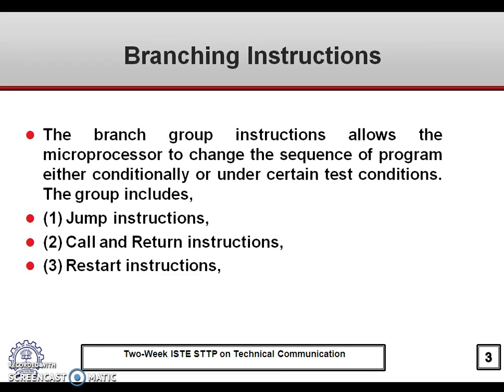What is a branching instruction? It is an instruction which allows the microprocessor to change the sequence of program execution either conditionally or unconditionally under certain test conditions. This group includes jump instructions, call and return instructions, and restart instructions.